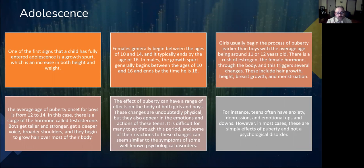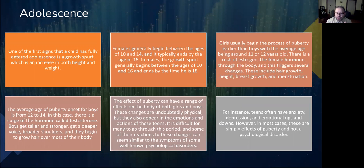One of the first signs that a child has fully entered adolescence is a growth spurt — an increase in both height and weight. Females generally begin between the ages of 10 and 14 and it typically ends by the age of 16. In males, the growth spurt generally begins between the ages of 10 to 16 and ends at the age of 18. Girls usually begin the process of puberty earlier than boys, with the average age being around 11 or 12 years of age.